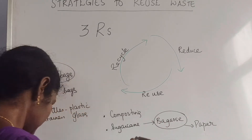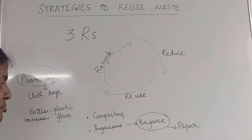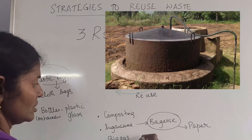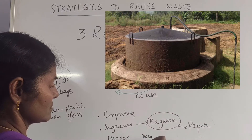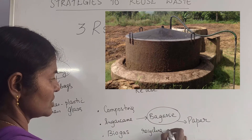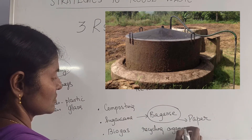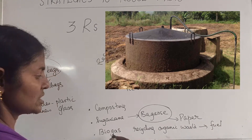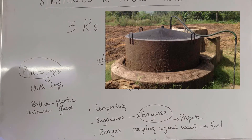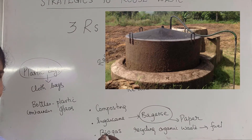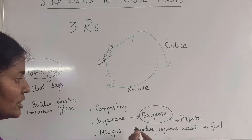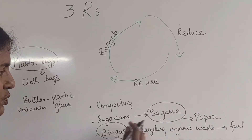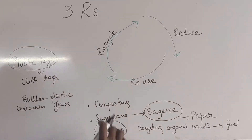The third example is biogas plants, where you are recycling organic waste into fuel. Biogas plants in villages are used as domestic fuels and also for street lighting. It is excreta of animals which is used to give fuel. So that is recycling.